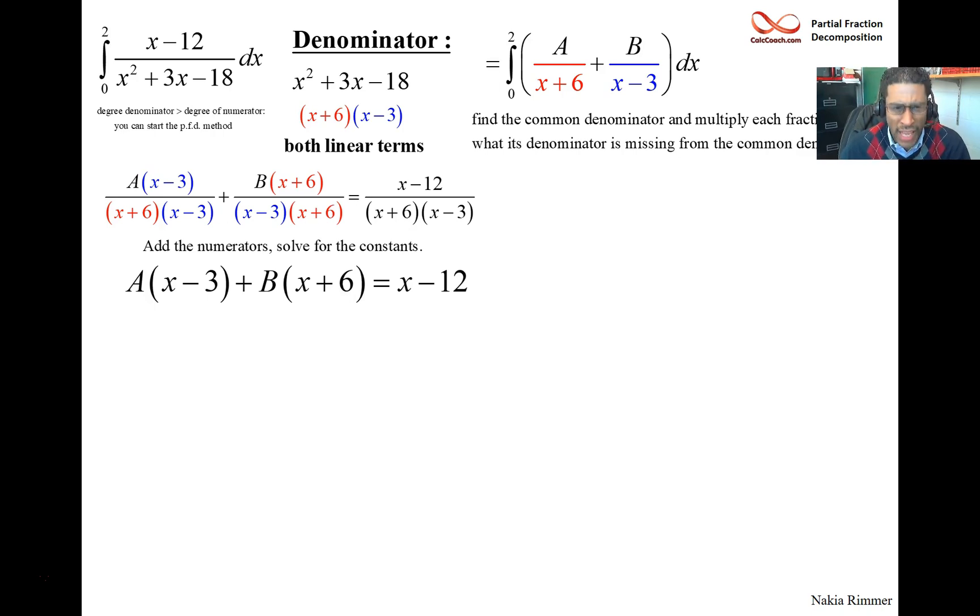And now they have the same denominator, and you can add the numerators. And this gives you an equation. A times x minus 3 plus B times x plus 6 is equal to the original numerator, when you put it back together, of x minus 12.